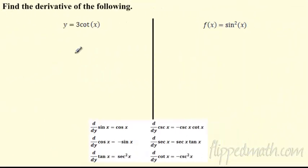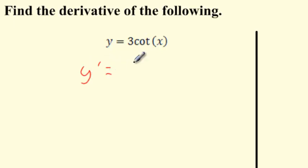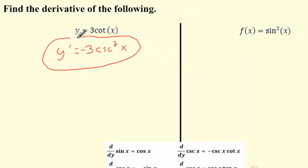Let's find more derivatives. The next one says we've got 3 cotangent x. Remember, 'co' is going to be negative — it's a co, so it's a negative derivative. I've got this coefficient of 3 in front; it just comes right on down, just like in the power rule. The derivative of cotangent is negative cosecant squared x. Don't forget it is negative — those co's are always negative. They're very unhappy trig functions.